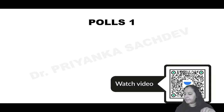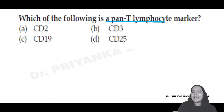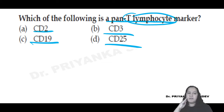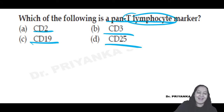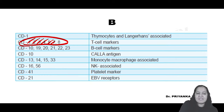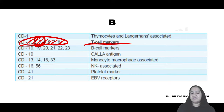Poll question: Which of the following is the pan-T lymphocyte marker? Options: CD2, CD3, CD19, or CD25. The correct answer is B - CD3. From all T cell markers (1, 2, 3, 4, 5, 7, 8), CD3 is the pan-T marker present on all T cells. CD19 is a B cell marker, not a T cell marker.